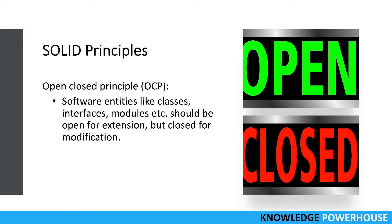To follow the Open/Closed Principle: design a class, compile it, version it, and release it as a library. Clients who depend on that version should not be broken by future changes. Ensure backward compatibility by creating child classes with additional behavior, so new clients benefit from the child class while existing clients remain unaffected. Inheritance is the primary mechanism used to follow this principle.